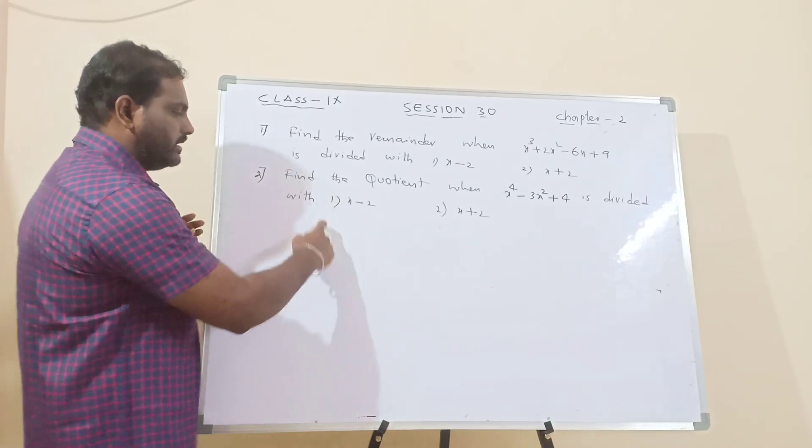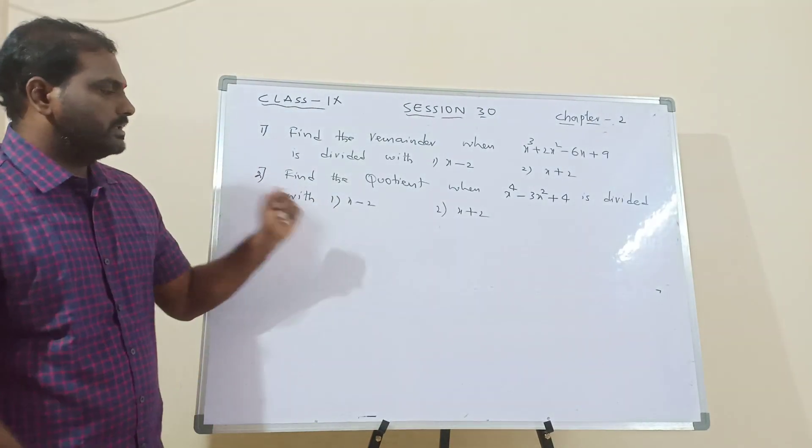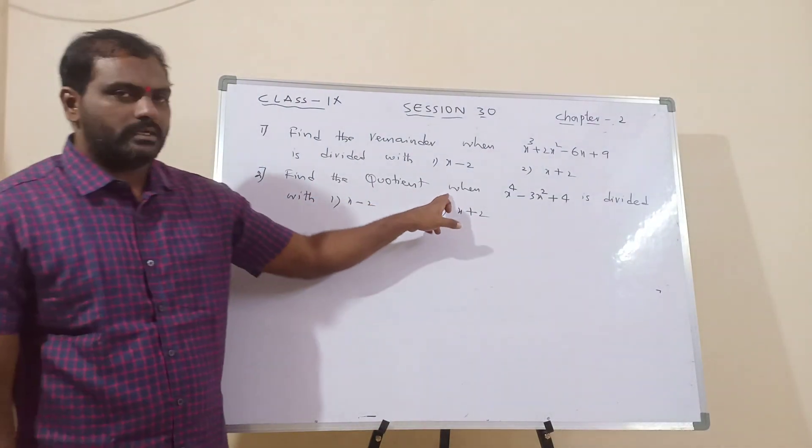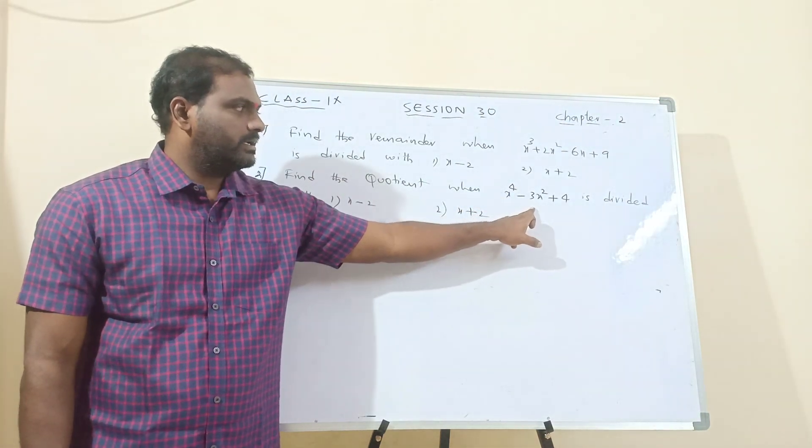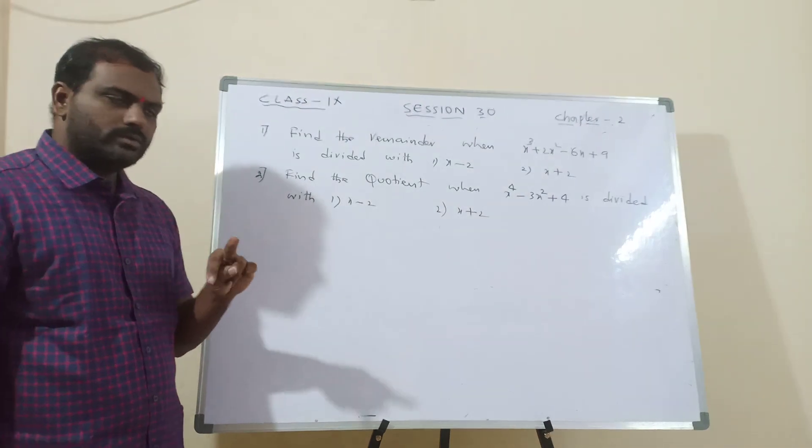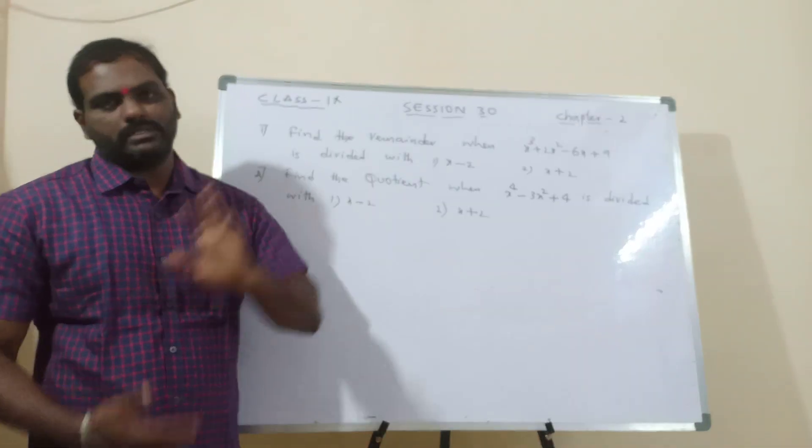So, the division method is data. We have to take this one. So, that, find the coefficient when x power 4 minus 3x square plus 4 is divided with, here are also two questions, x minus 2 and x plus 2.